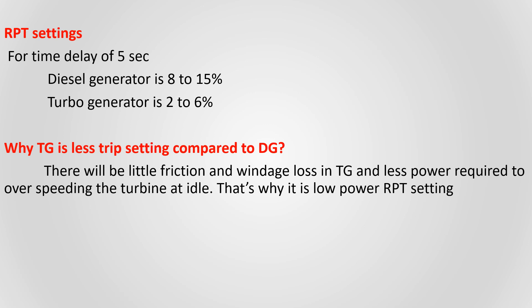Reverse power trip setting for a diesel generator is 8 to 15 percent, and for a turbo generator it is 2 to 6 percent. The setting value can vary and depends on the maker. For example, if the generator is producing 3000 kilowatt and the trip setting is 10 percent, that is 300 kilowatt. But when reverse power flows, the value of the power reading in the controller shows minus 300 kilowatt, because the generator is taking power from the busbar.